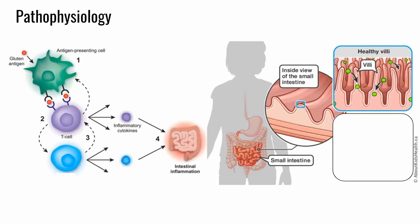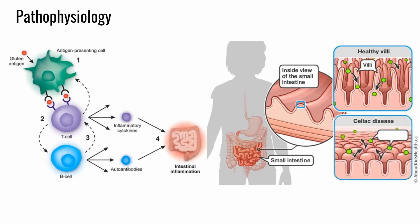These T cells then stimulate another type of specialized immune cell called B cells, which release autoantibodies that attack the recognized gluten antigen, leading to further inflammation. Prolonged inflammation eventually results in damage to the small intestinal lining in the form of flattened villi and cell death among enterocytes. The reduced surface area of the intestinal lining and the destruction of its epithelial cells subsequently leads to the malabsorption of nutrients by the small intestine.